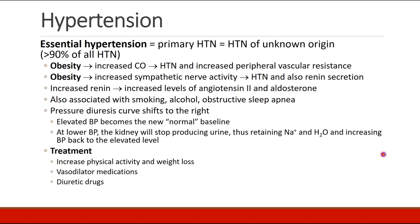Essential hypertension, also called primary hypertension or hypertension of unknown origin, accounts for the vast majority of all hypertension. This is often related to obesity, which increases cardiac output, leading to high blood pressures and increased resistance. Obesity also increases sympathetic nerve activity, which leads to hypertension and renin secretion. Increased renin will also lead to increased levels of angiotensin II and aldosterone, leading to fluid retention.